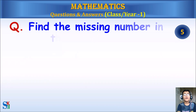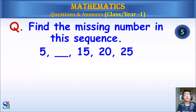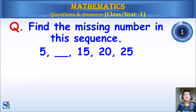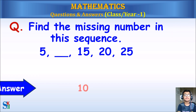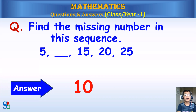Find the missing number in this sequence: 5, what comes next? The sequence is 5, 10, 15, 20, 25. Answer: 10.